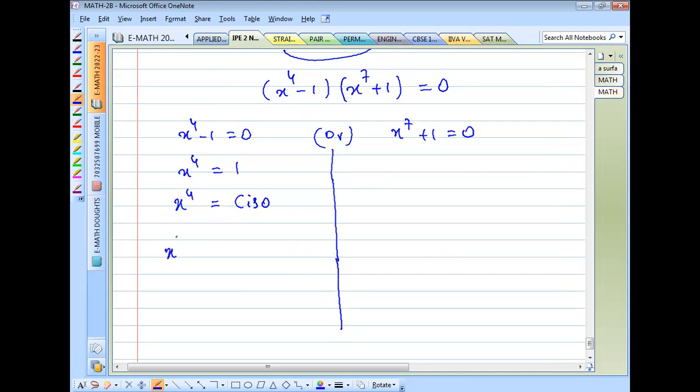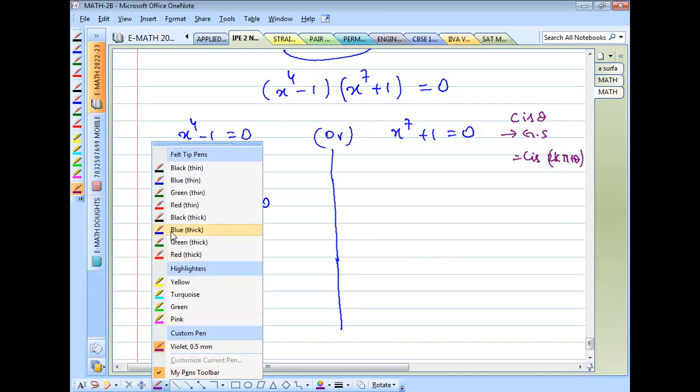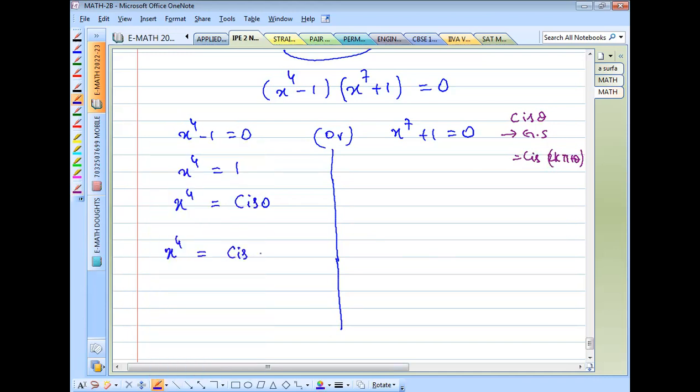Let's talk about all solutions. All solutions are 2kπ. The general solution for cis θ is n π plus θ, or 2kπ plus θ. Here, theta is 0, so the solution is 2kπ plus 0.